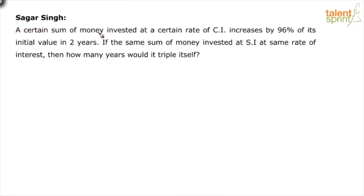A certain sum of money invested at a certain rate of compound interest increases by 96% of its initial value in two years. If the same sum of money is invested at simple interest at the same rate of interest, then in how many years would it triple itself?